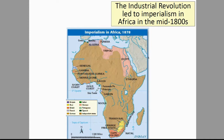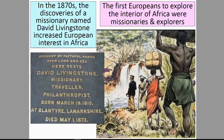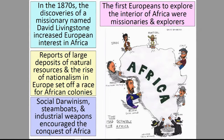The Industrial Revolution led to imperialism in Africa in the mid-1800s. In the 1870s, the discoveries of a missionary named David Livingstone increased European interest in Africa. The first Europeans to explore the interior of Africa were missionaries and explorers. Reports of large deposits of natural resources and the rise of nationalism in Europe set off a race for African colonies.